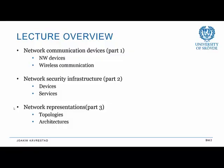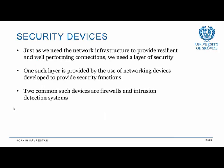Let's go into part number two on this network security infrastructure lecture. In this part, we will talk about some security devices and services. Just as we need network infrastructure to provide a resilient and well-performing network connection, we need a layer of security. One such layer is provided by networking devices developed for security functions. The two main devices we'll focus on are firewalls and intrusion detection systems.